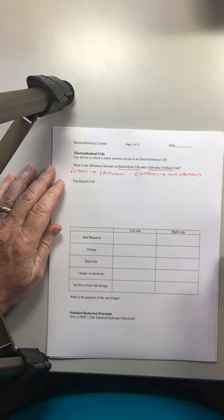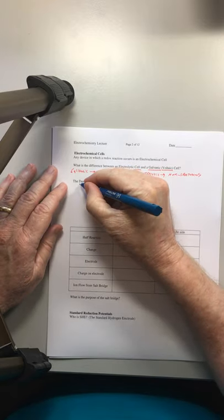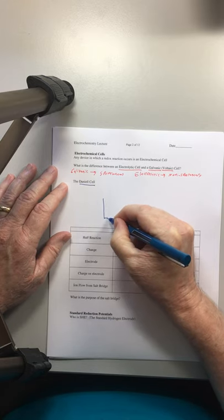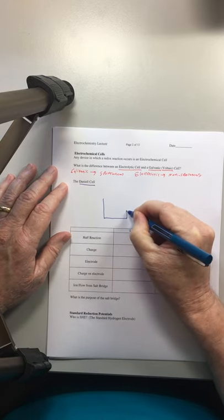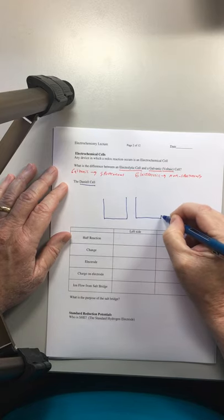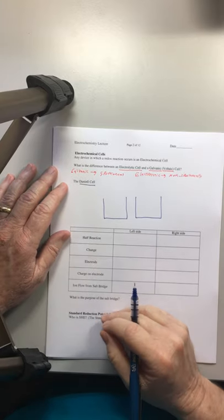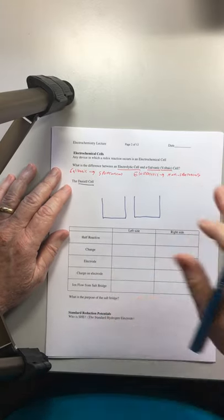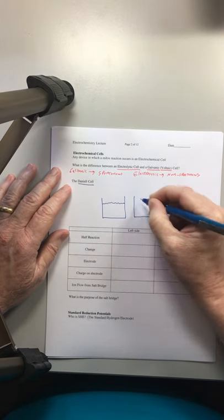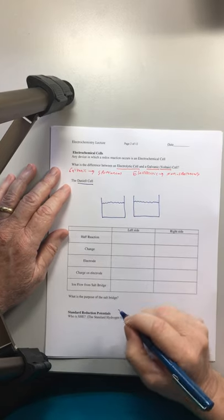To introduce these historically, we have always used something called the Daniell cell, named after some French guy. And it is composed of two beakers. It is possible to get very fancy custom-made ones for this, but typically just two beakers that are side-by-side.